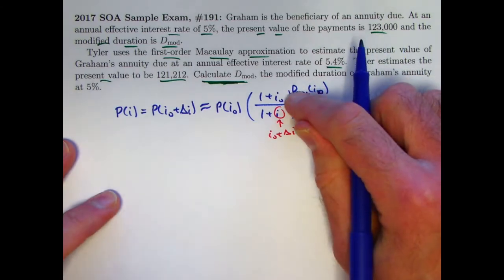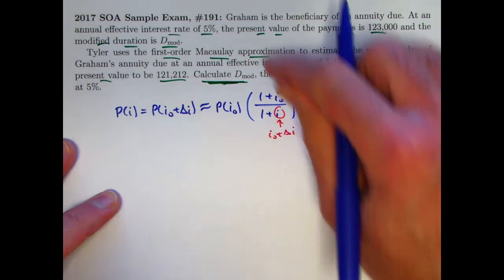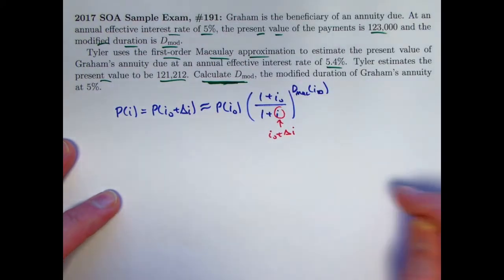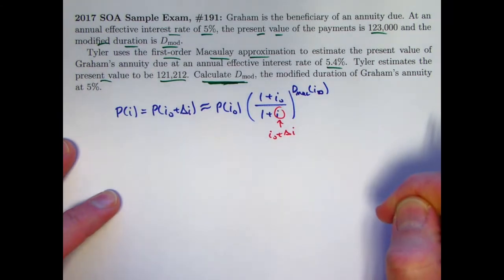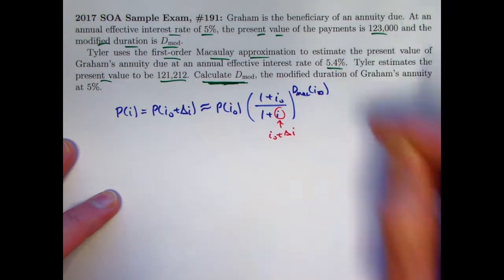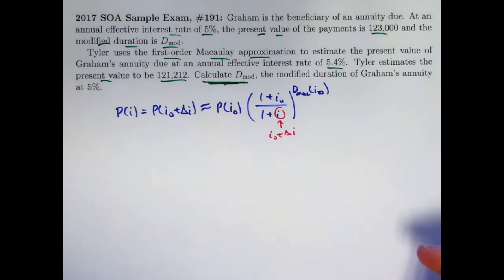With this problem, the top of this fraction is going to be 1.05, i0 is 0.05, and the bottom is going to be 1.054, because that's the interest rate that Tyler was thinking about.